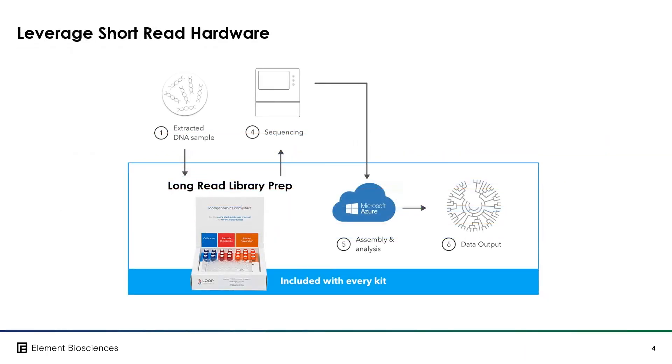The LoopSeq technology is comprised of chemistry and software. The chemistry is the LoopSeq sample prep, which uses either long DNA or RNA molecules as its input material. The output of the prep is a short read library, which can be sequenced on either an Element Biosciences or an Illumina sequencer.